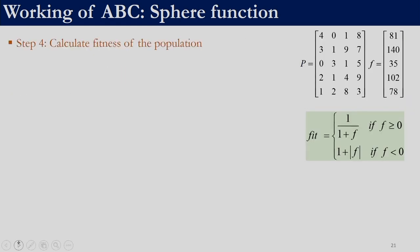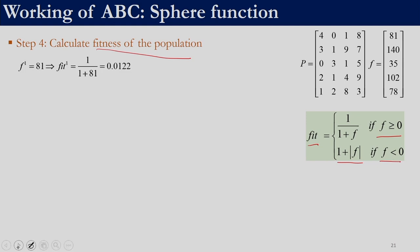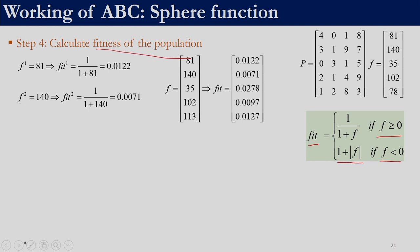The next step is to calculate the fitness of the population. Remember that in other metaheuristic techniques, the objective function was the fitness function value, whereas here the fitness function is determined using the formula: fitness = 1/(1 + f) if the objective function is ≥ 0, or 1 + |f| if the objective function is < 0. We calculate the fitness of all solutions to get our initial population with objective and fitness function values.